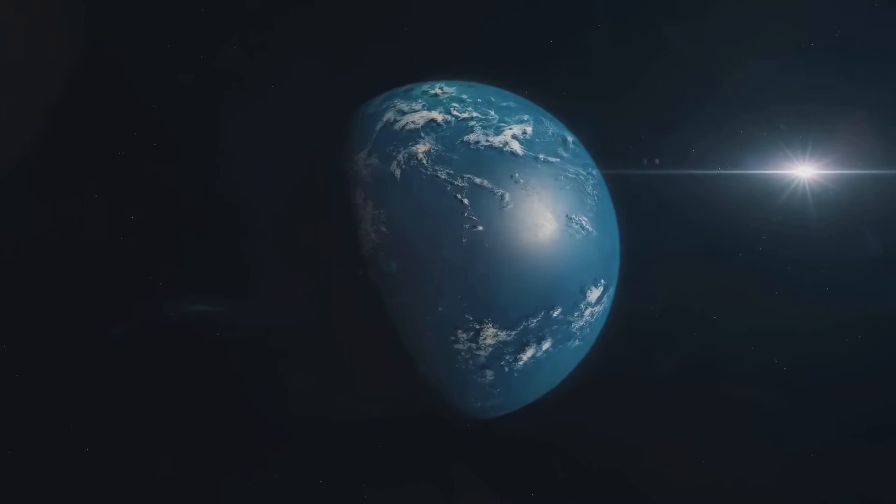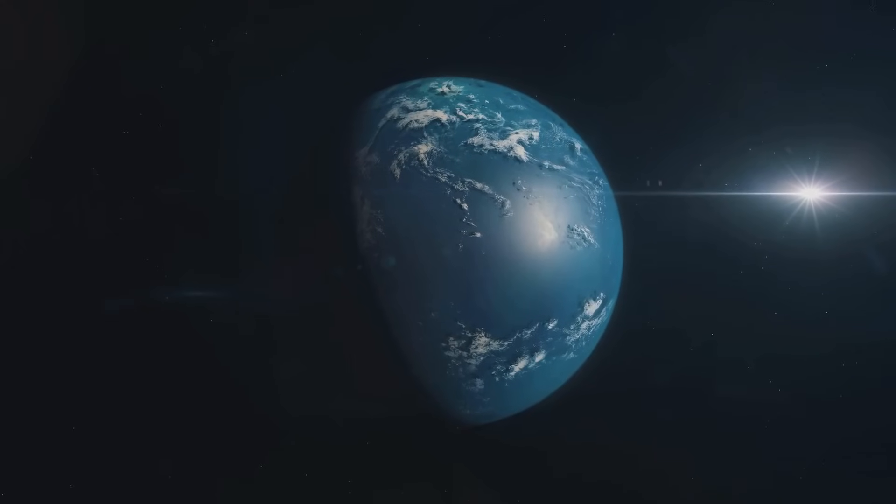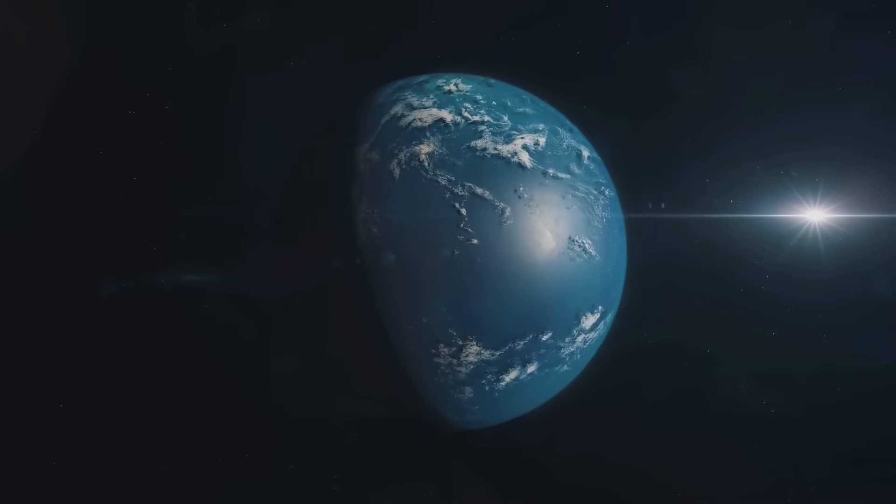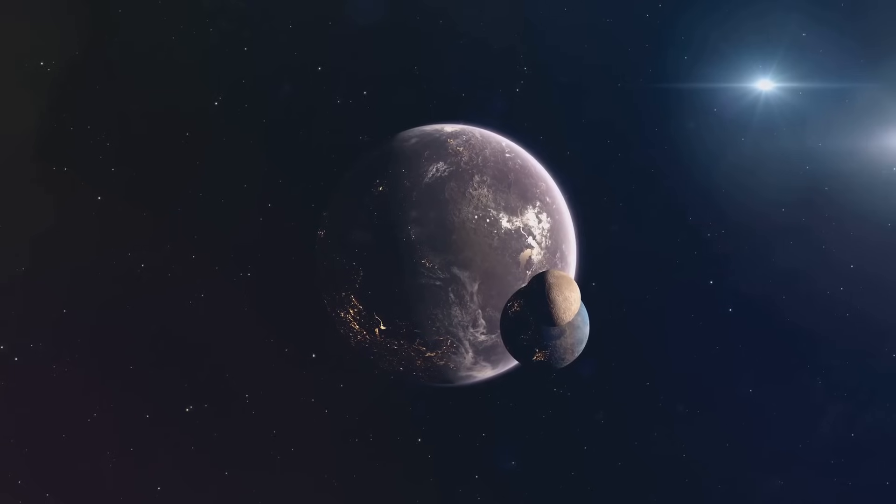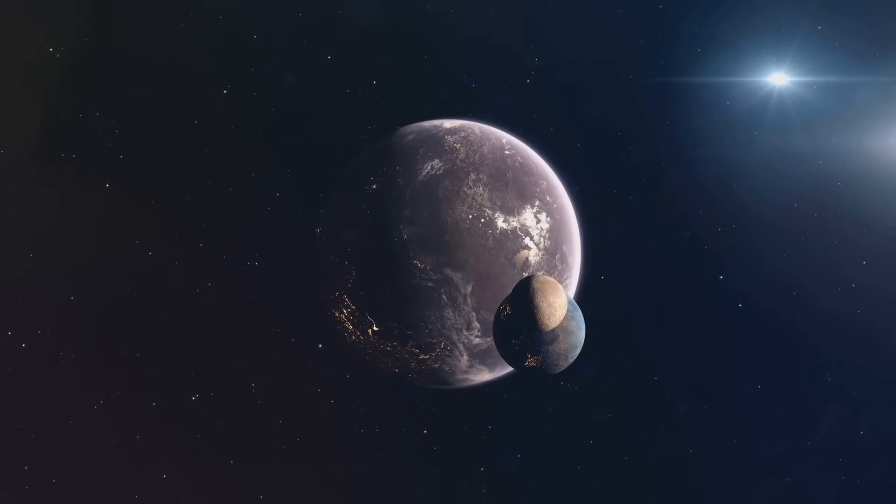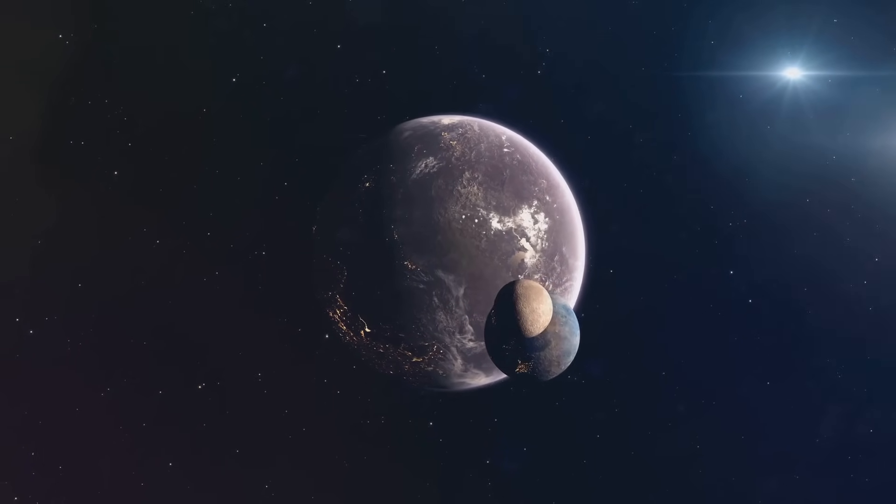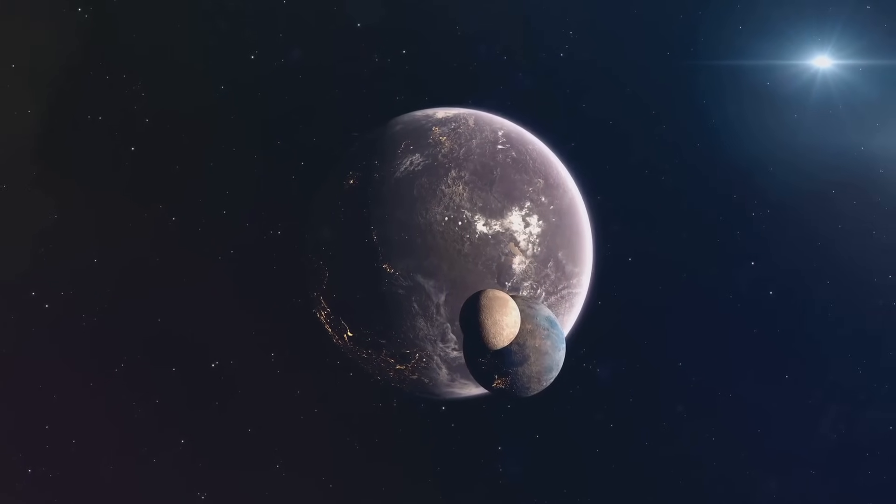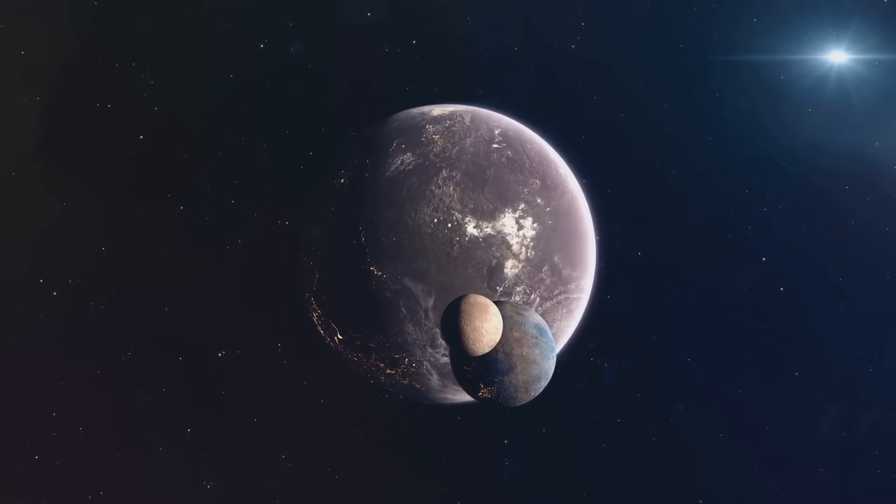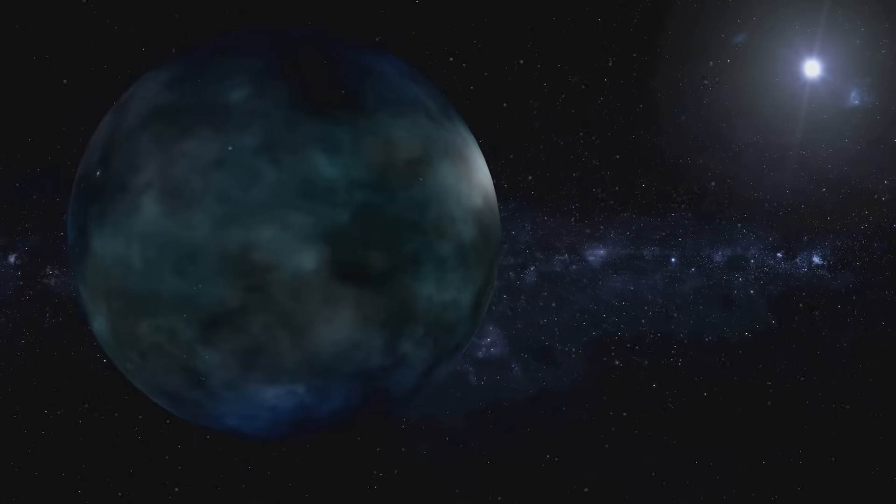A habitable planet is one that's just right for life as we know it to thrive. Imagine you're making a cup of tea. It can't be too hot or too cold. It needs to be just right. That's the premise of the Goldilocks Zone, a term coined by astronomers to describe the habitable zone around a star where the conditions could allow life to exist.